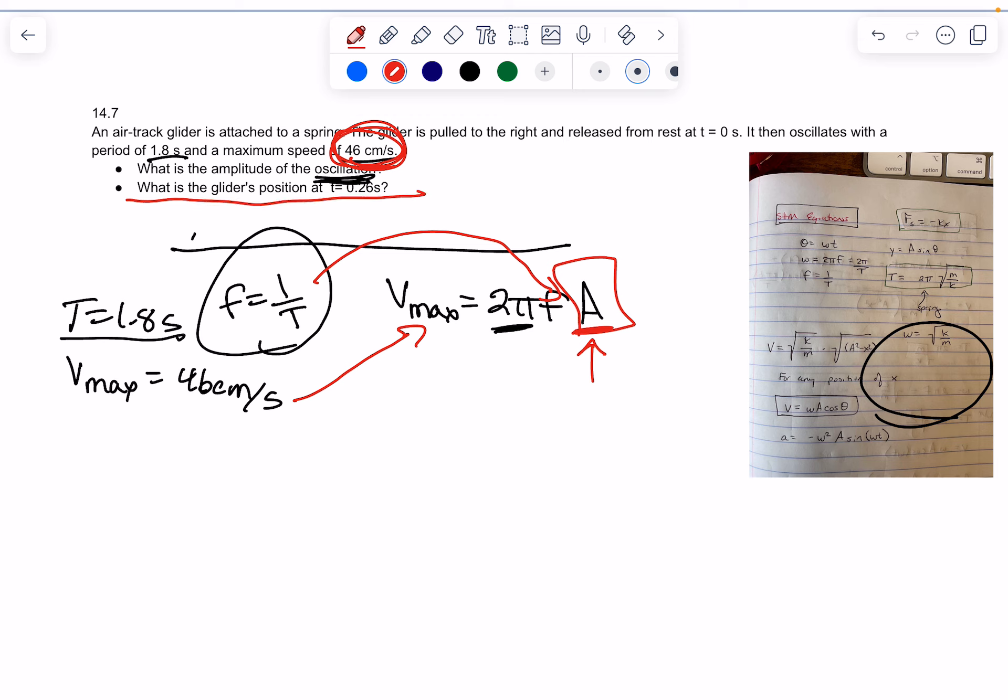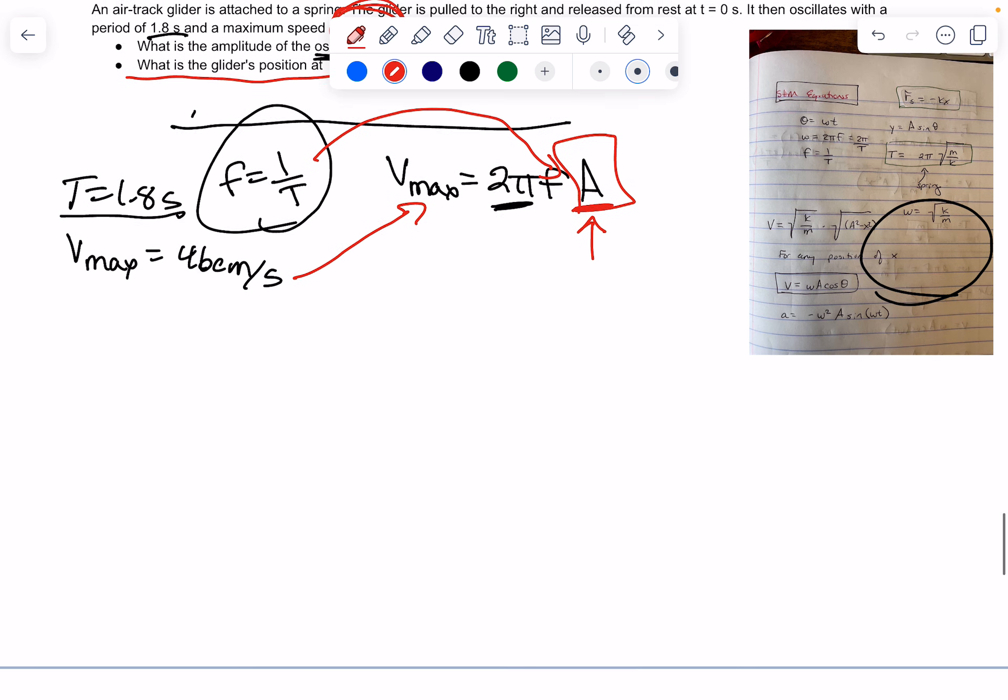Now, the question is, what's the glider's position at T equals 0.26 seconds? And again, this is a matter of knowing what the right equation is. It's very simple if you know the equation.